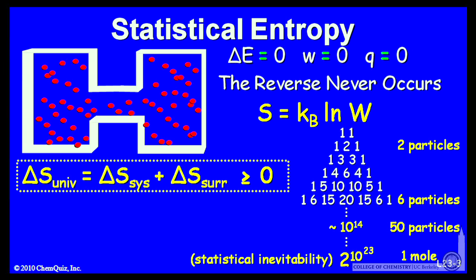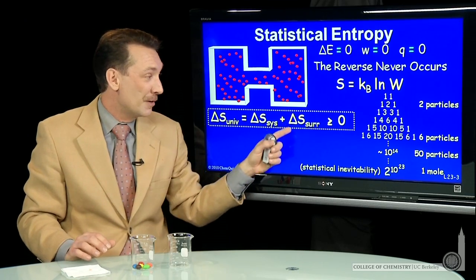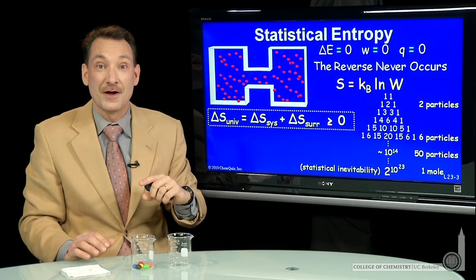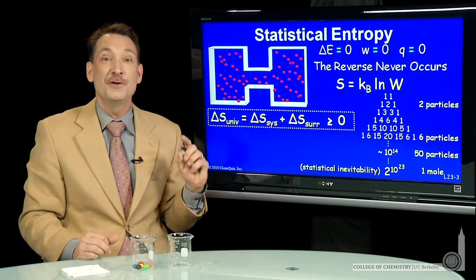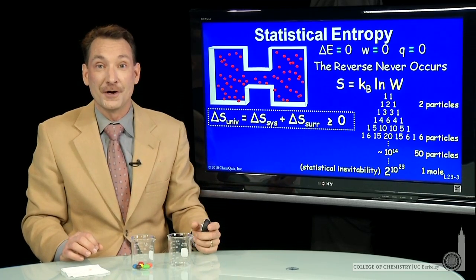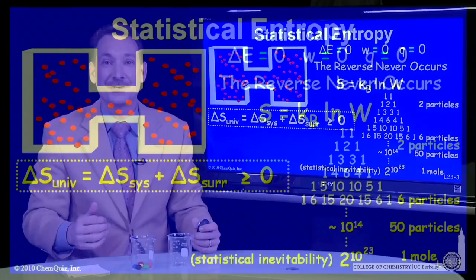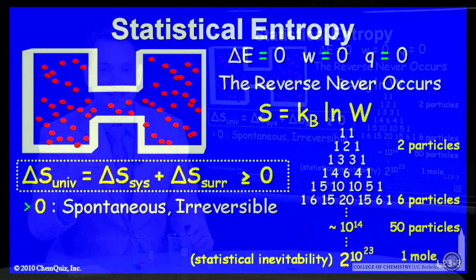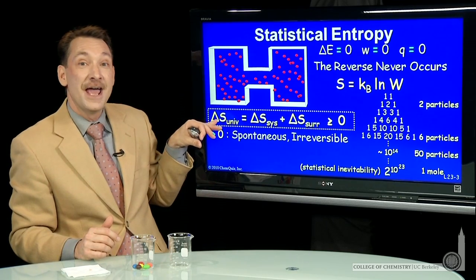We'll talk about this entropy change. If you measure the number of ways you can arrange the system and how that changes — the entropy of the system and the entropy of the surroundings — you'll find that for all processes that proceed naturally, the entropy of the universe increases. So this is a thermodynamic parameter that is not conserved. The entropy of the universe continues to increase for every process that occurs. Processes that occur with an increase in the entropy of the universe are called spontaneous. Spontaneous is the natural direction of the universe, and it occurs when entropy of the universe increases.